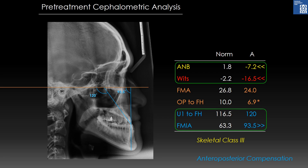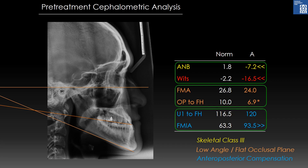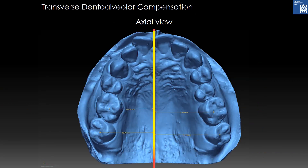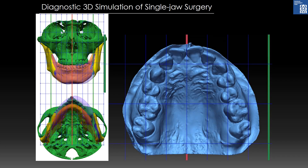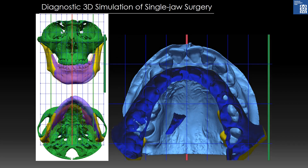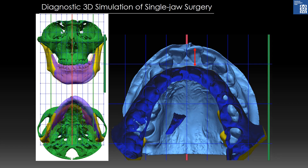Frankfurt mandibular plane angle was 24 degrees and the occlusal plane was only 6.9 degrees. This flat occlusal plane can be considered as a vertical dental alveolar compensation to the excessive vertical growth of the ramus. The maxillary arch was narrower on the right side and wider on the left side due to the transverse compensation to the mandibular shift to the left. Before starting treatment, a 3D simulation of surgery was made for diagnostic purposes with the mandible in the ideal position, shown in orange on the left figures and dark blue on the right figure. At this diagnostic surgical occlusion, a lingual crossbite was formed on the right side and a large anterior open bite was formed. This simulation revealed the true extent of dental alveolar compensation to the mandibular asymmetry and prognathism.